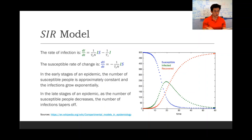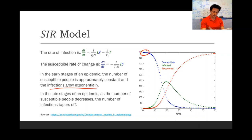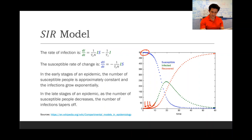Now in the early stages of an epidemic, the number of susceptible people is approximately constant, and therefore the infections grow exponentially. So the rate at which new people get infected is essentially just proportional to how many people are currently infected. In the later stages of an epidemic, as the number of susceptible people decreases, the number of infections starts to taper off.